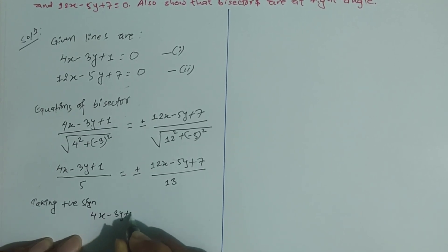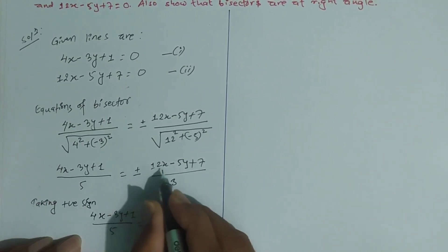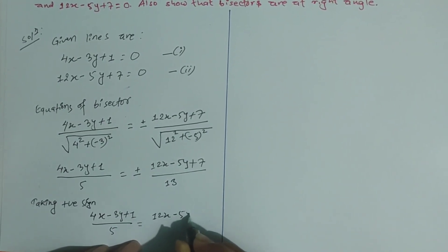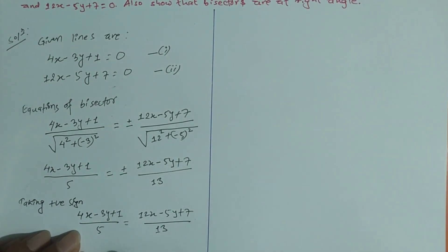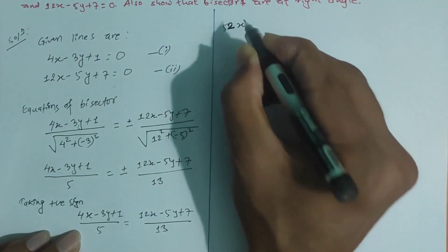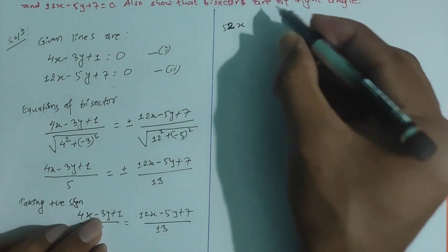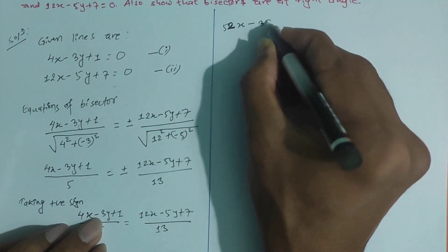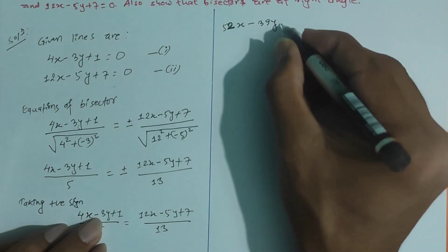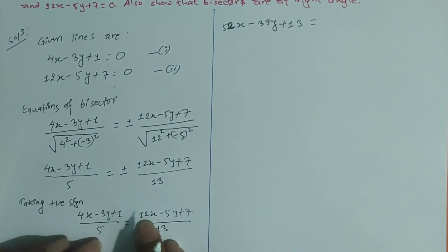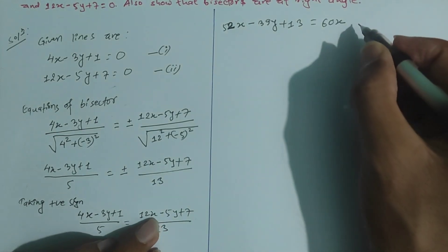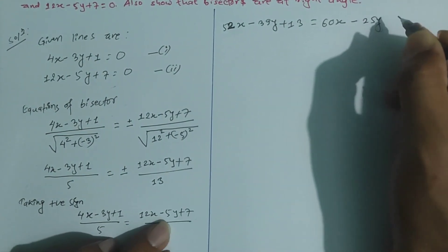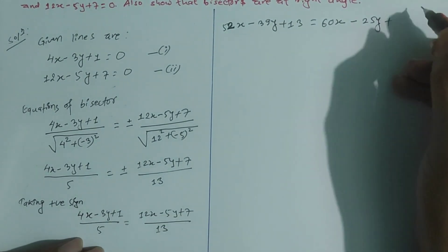3y plus 1 by 5 equal to plus value 12x minus 5y plus 7 by 13, positive value. Now cross-multiplying: 13 times 4 gives 52x, 13 times 3 gives 39y, plus 13 times 1 equals 5 times 12 gives 60x, minus 5 times 5 gives 25y, plus 5 times 7 gives 35.